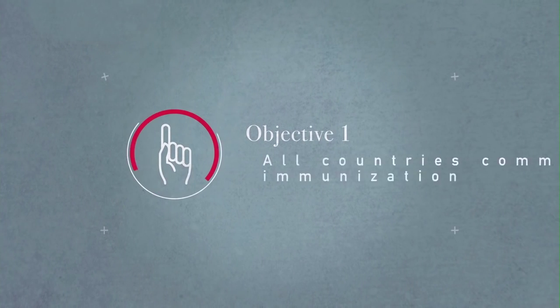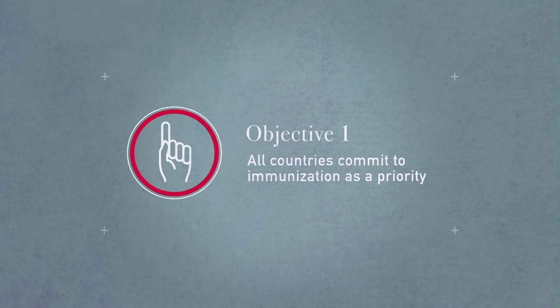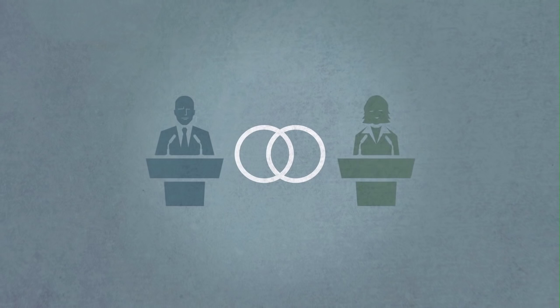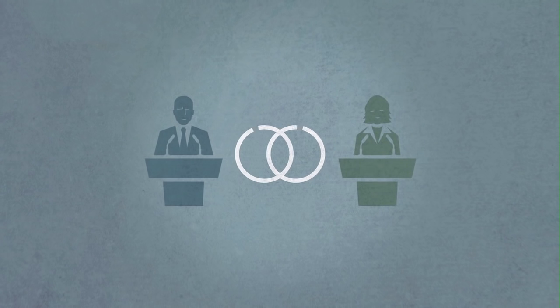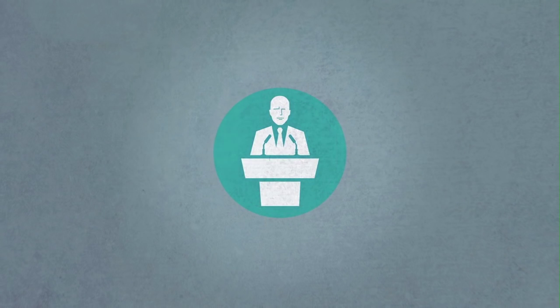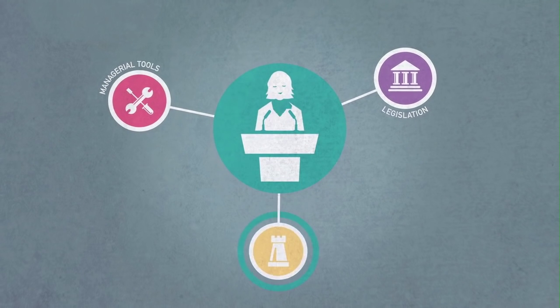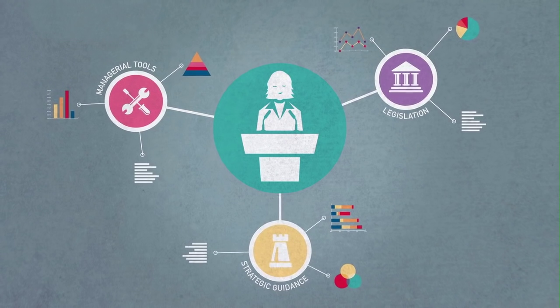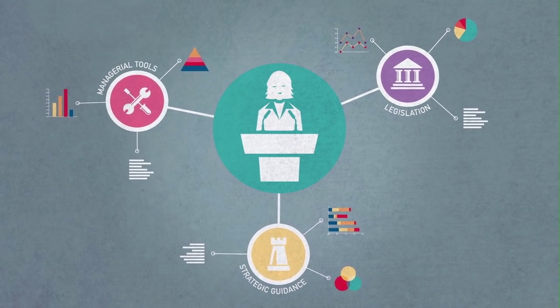Objective 1: All countries commit to immunization as a priority. To reach our common goals, the engagement and ownership of political decision-makers is crucial. They need to commit to immunization as a force for good in public health and as an individual right. We need to make sure that national immunization programs are supported by legislation, governed by managerial tools, and receive strategic guidance so that they can formulate and implement policies that are based on evidence.